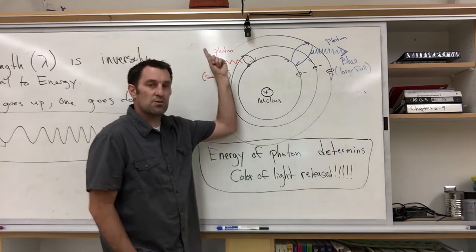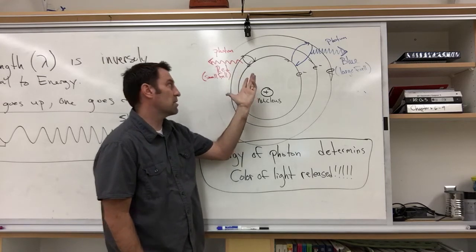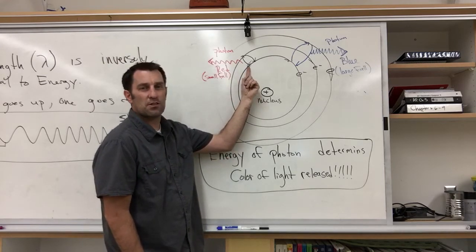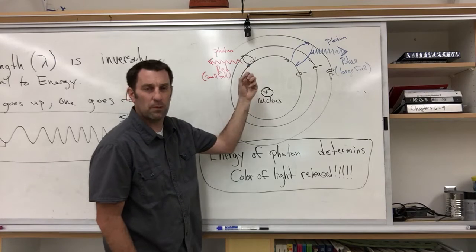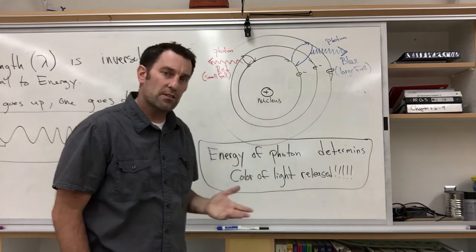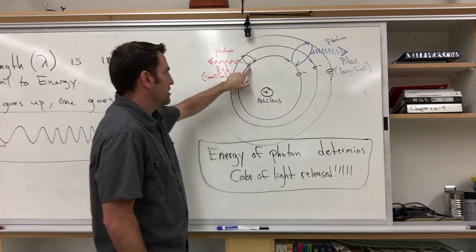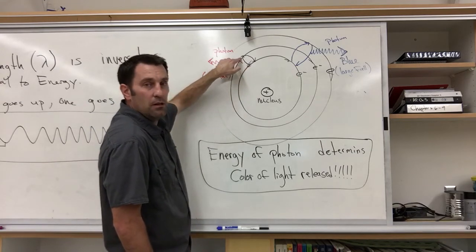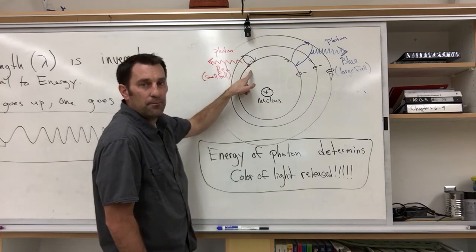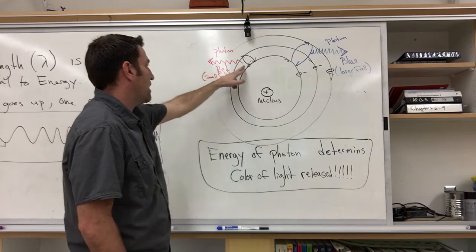We have some source of energy coming in, like a microwave or something. It hits an electron that's hanging out in a lower energy level, represented by rings. We know that's not the model, but it's easier to draw. The electron jumps up, and then it falls back down.